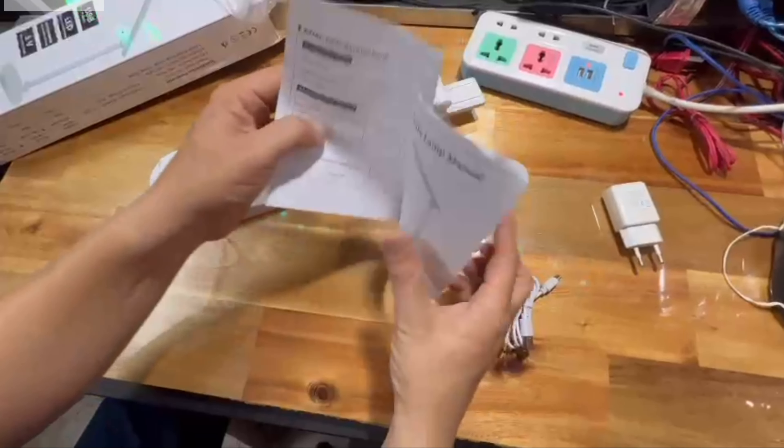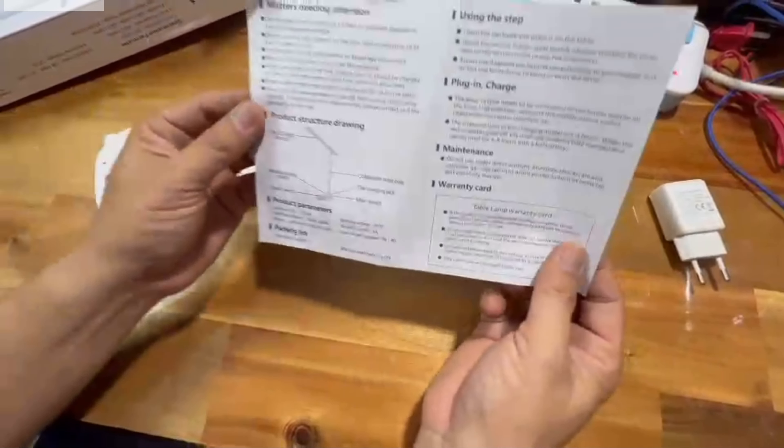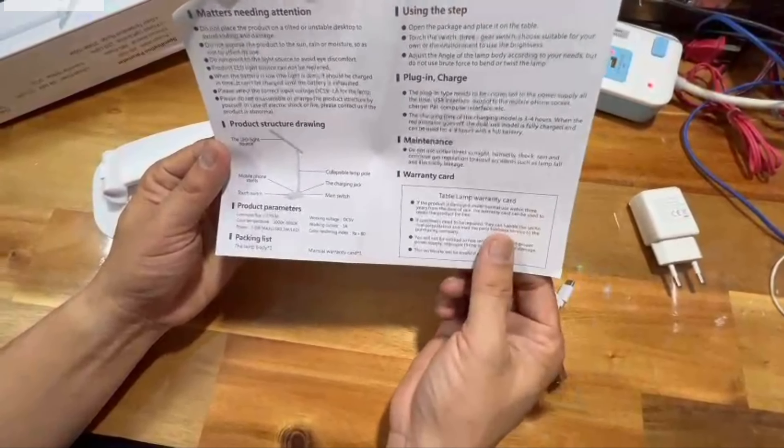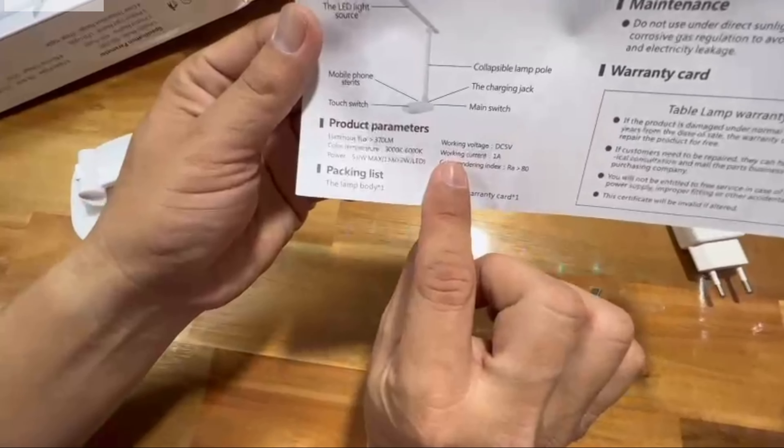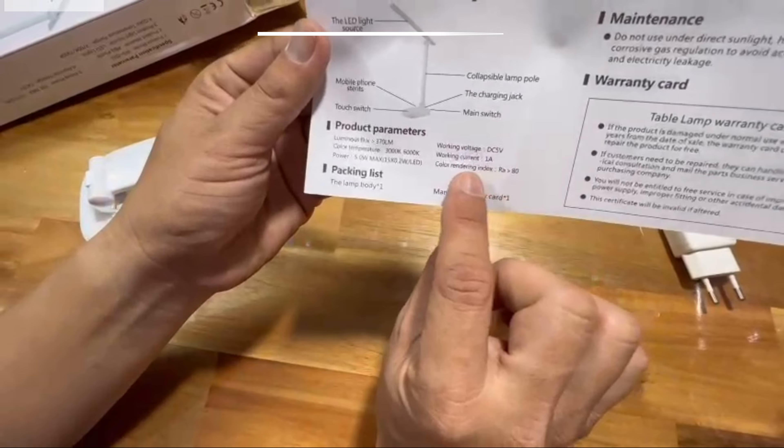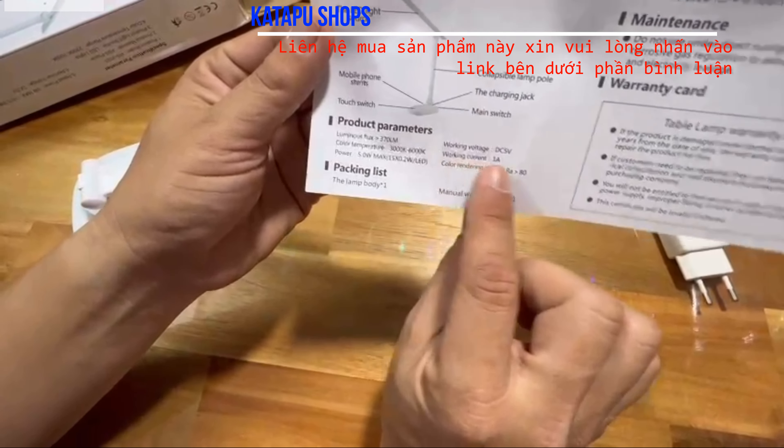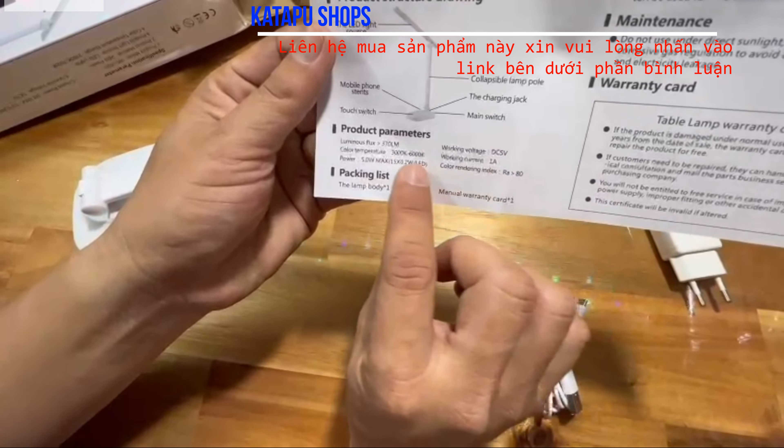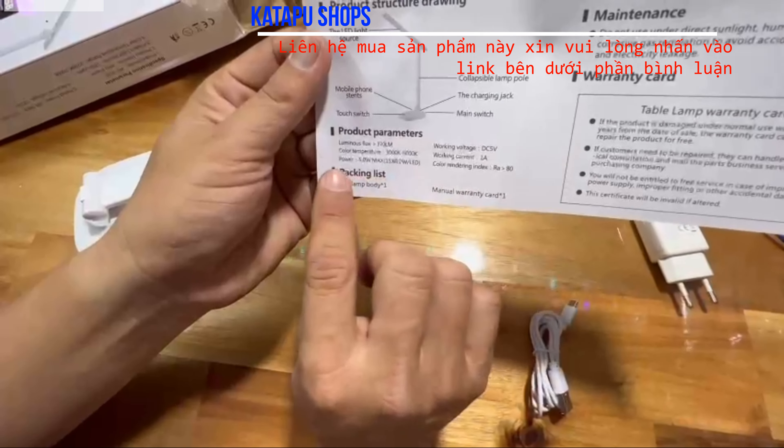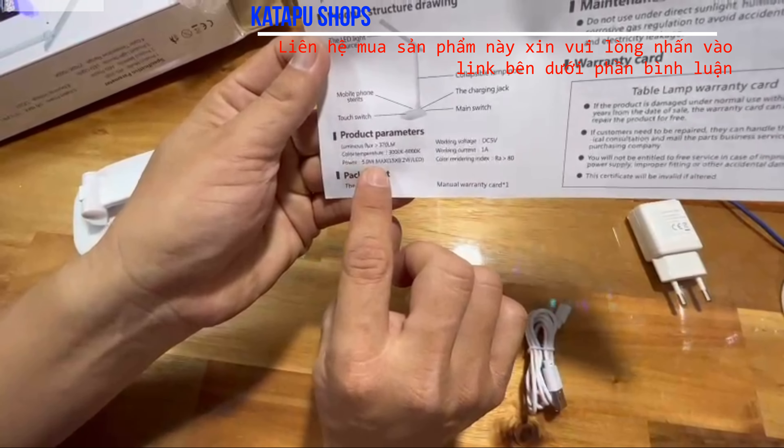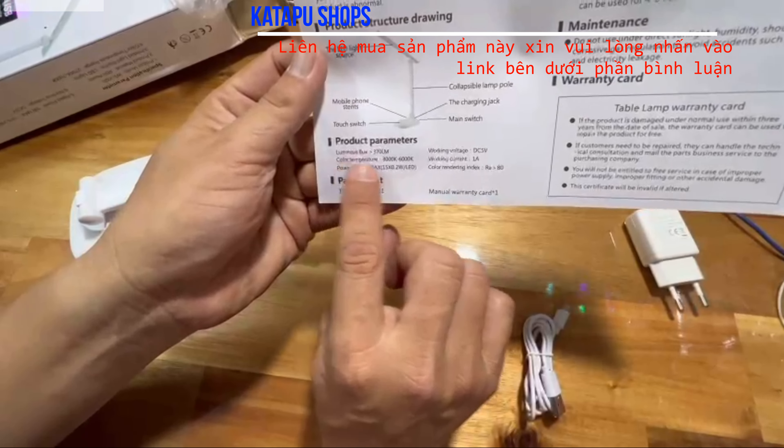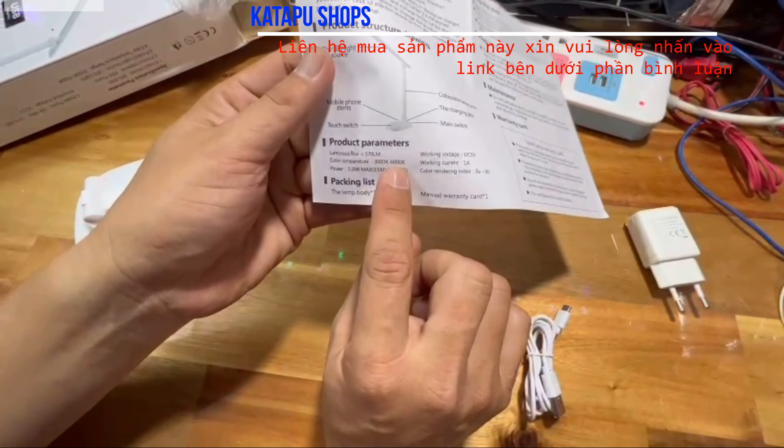Đây là sách hướng dẫn bằng tiếng Anh, rất dễ đọc. Đây là điện áp làm việc 1A dòng điện, điện áp là USB tức là 5V. Nguồn của nó khoảng 55W maximum, nhiệt độ màu từ 3000 tới 6000K.